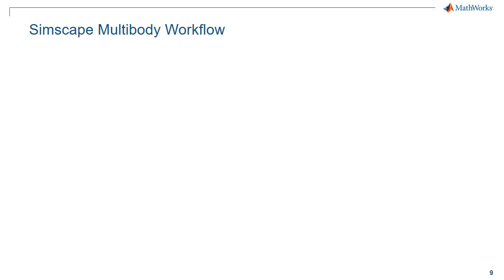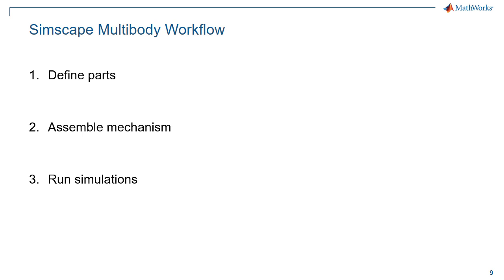The workflow with Simscape Multibody has four steps: define your parts, assemble your mechanism, run simulations, and test embedded software. Let's look at each of these steps.